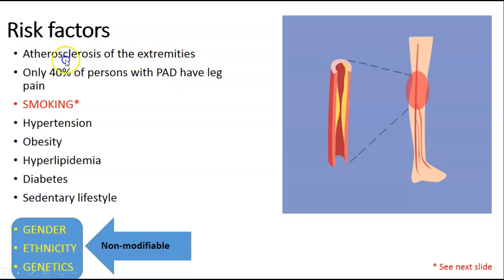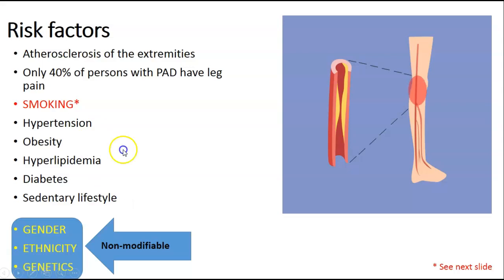Atherosclerosis of the extremities — 40% of patients with PAD will also have some leg pain. Smoking is going to be a big one. Hypertension, obesity, hyperlipidemia, diabetes, and sedentary lifestyle. A lot of these things can be modified through exercise, diet changes, or the addition of medications. Things that cannot be modified include gender, ethnicity, and genetics.